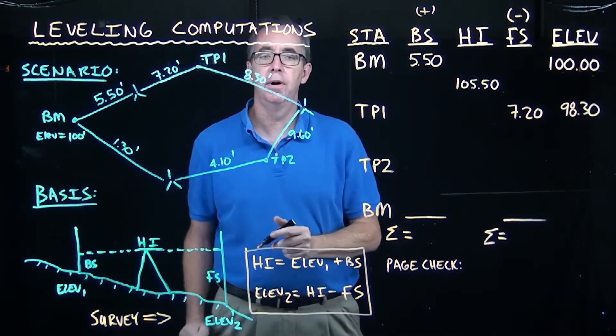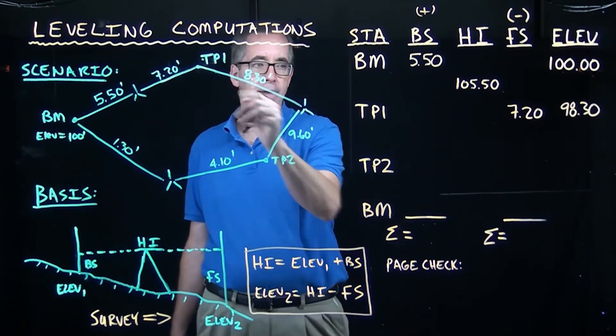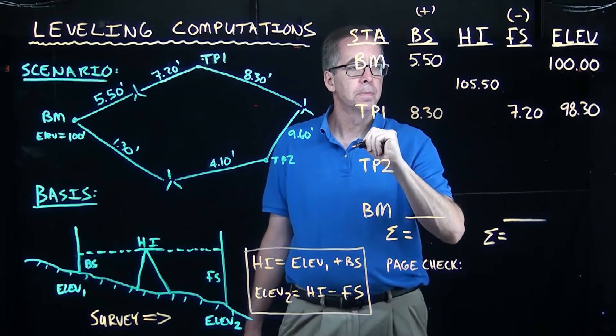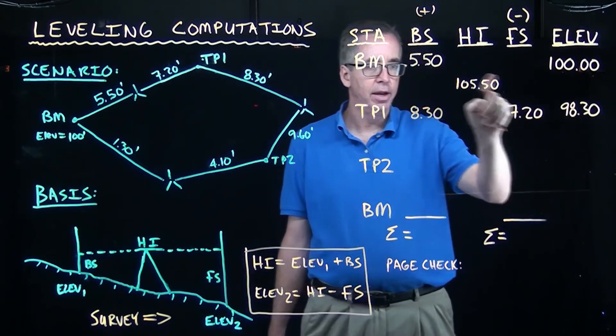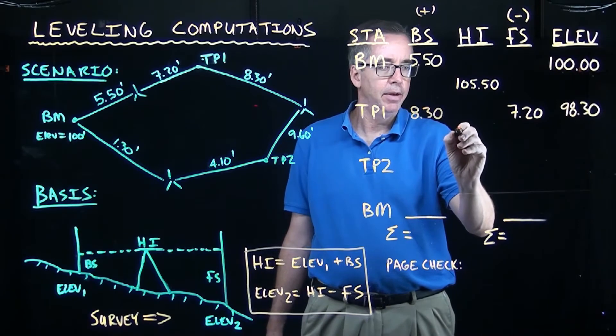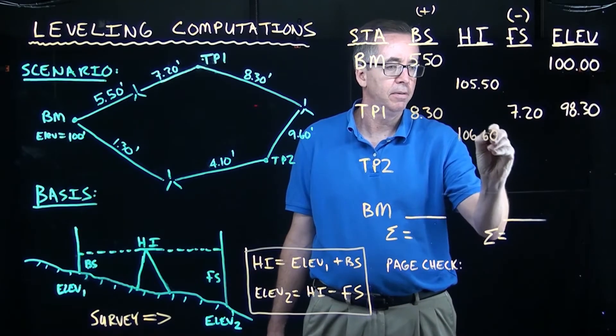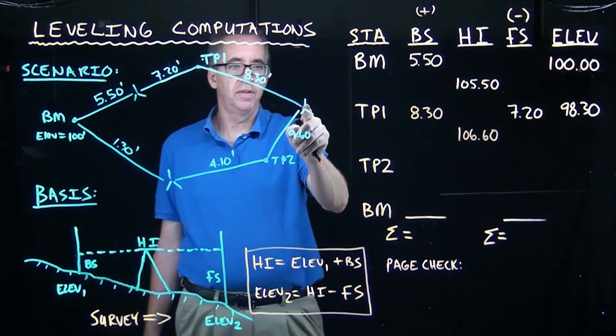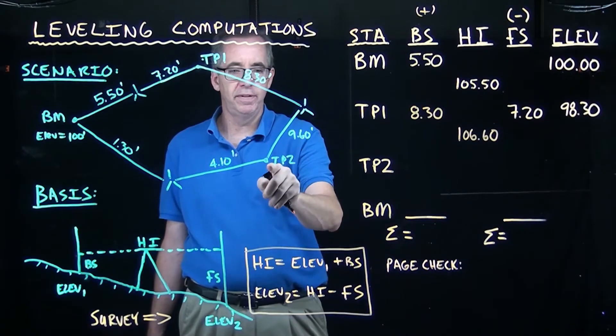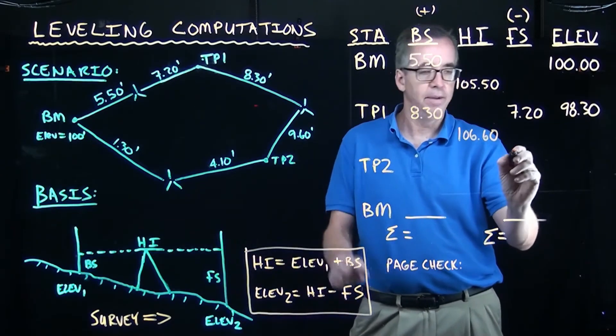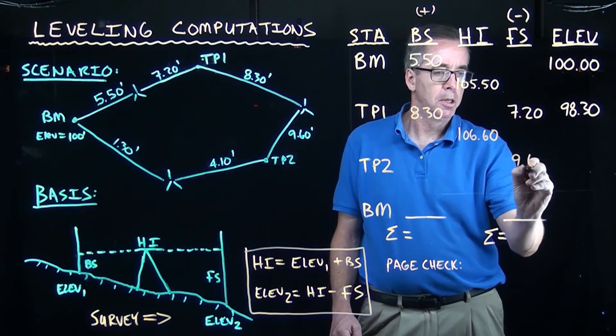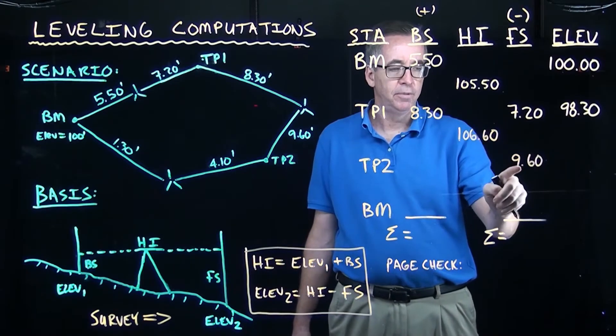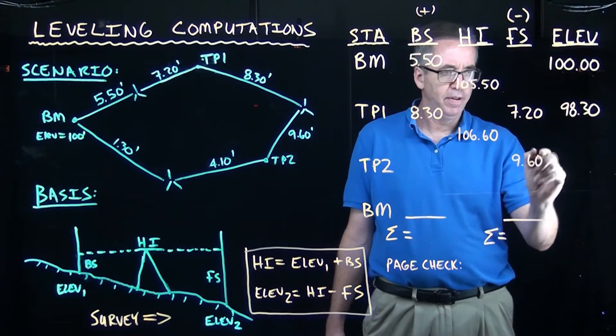After our turning point, the rod stays put, we now take our tripod, we move it over here, we did a backside of 8.3. So when I take my elevation of 98.3, I add 8.3, I'm going to get a new height of instrument of 106.60. So my height of instrument right here is 106.60. I do a foresight of 9.6 to turning point 2. So my foresight is 9.6. So if I subtract 106.60 and I subtract 9.6, I'm going to get an elevation of exactly 97.